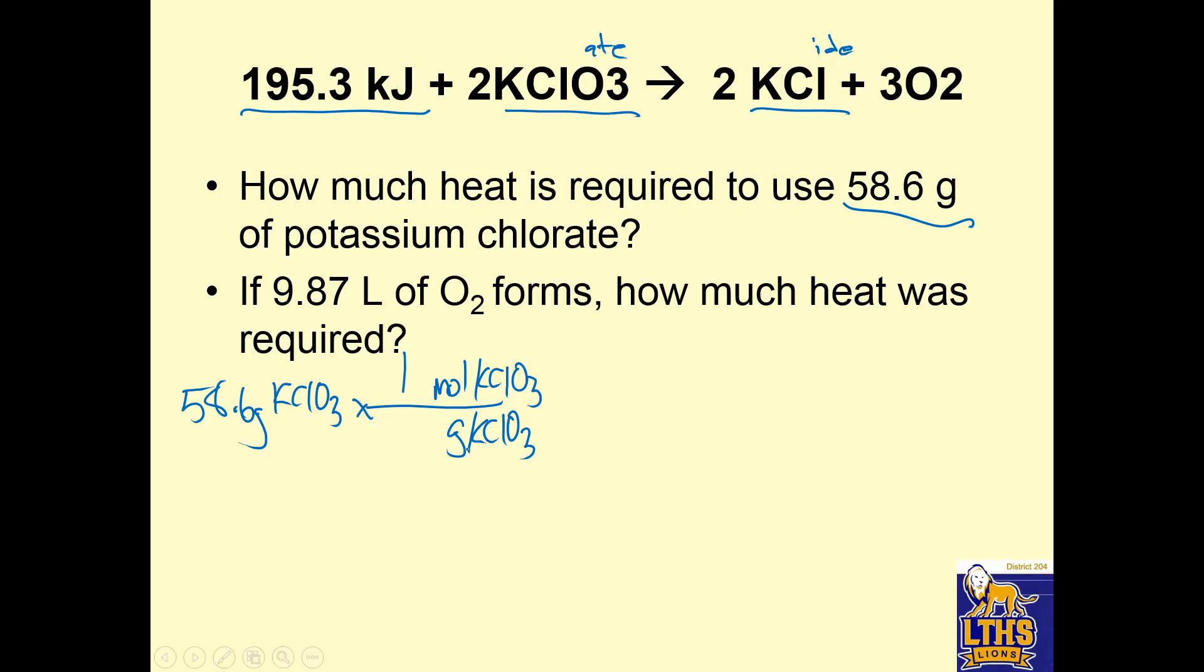So 1 mole of KClO3 equals go to the periodic table. So potassium is 39.10, plus chlorine is 35.45, plus 48 for 3 oxygens, and I get 122.55. Now when I'm in moles of KClO3, I want to go into heat, how much heat is required. So I need a relationship between KClO3 and kilojoules. Well, two KClO3s will give me 195.3 kilojoules. So 58.6 divided by 122.55 times 195.3 divided by 2 is 46.7 kilojoules.